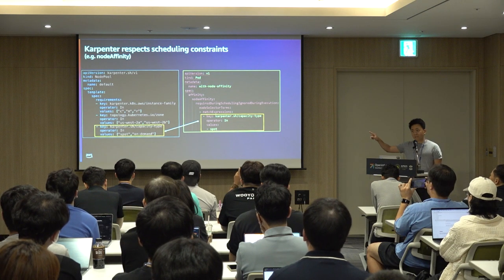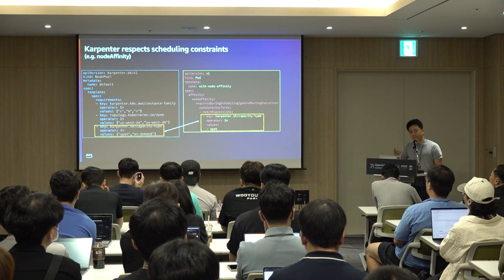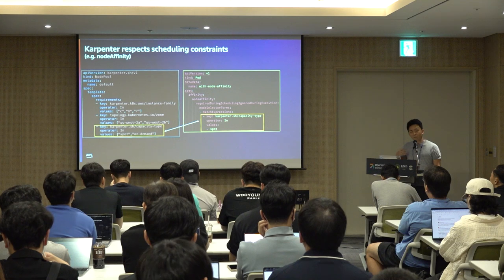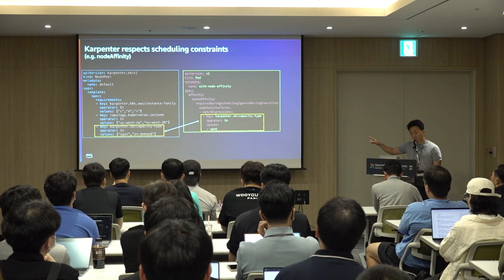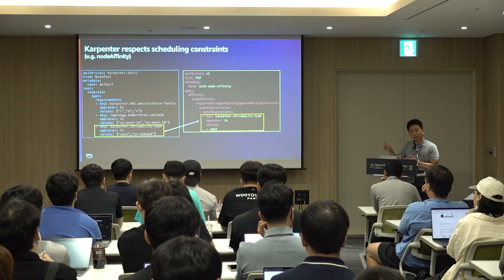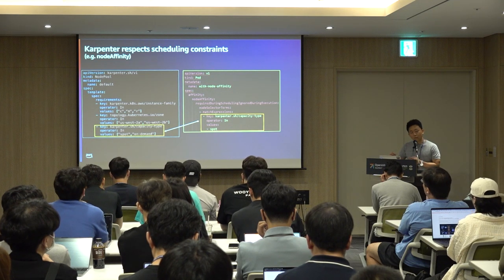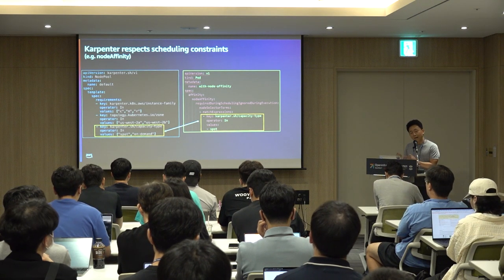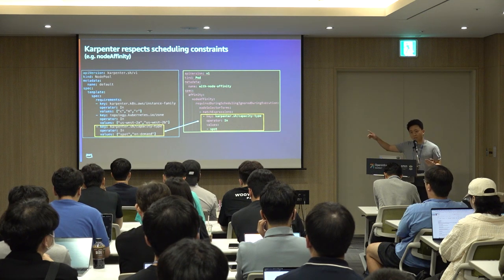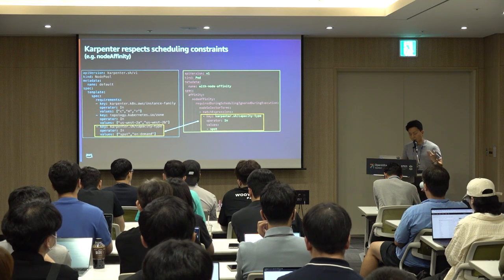For example, in this node pool we have both spot and on-demand, but you want to deploy workloads to only spot instances. Using node affinity with 'required during scheduling,' if a worker node doesn't have the specific label, the pod will not be scheduled. When a pod is pending, the Kubernetes scheduler tries to schedule it to a worker node with this label. If none is available, Karpenter creates a spot instance with that label — so if spot is not available, the pod will not be scheduled at all.